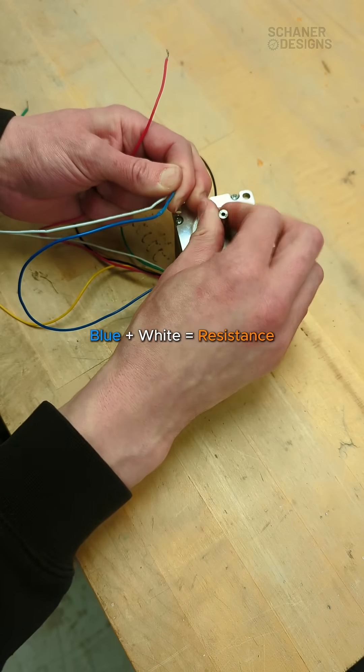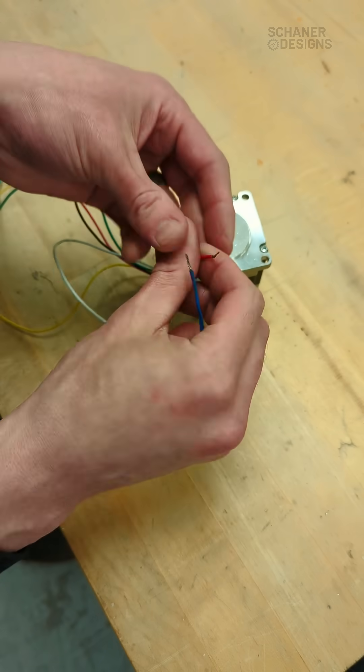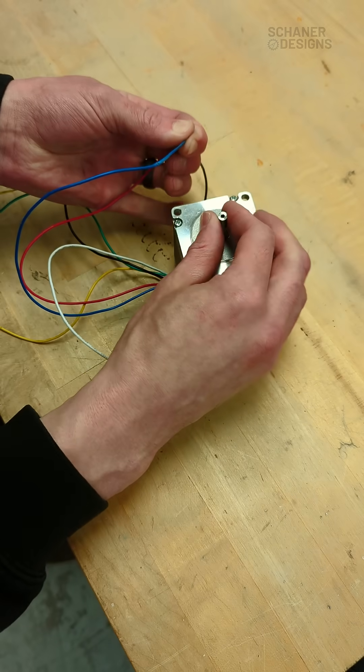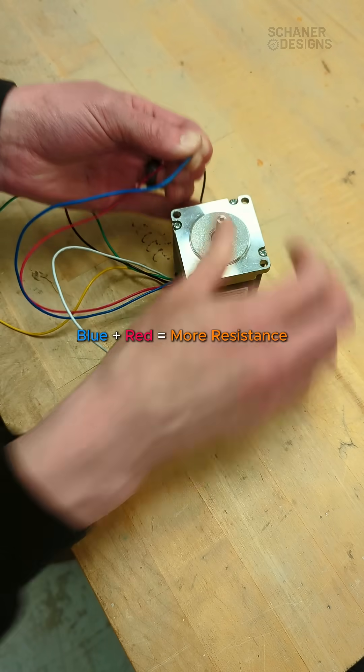So blue and white—there's definitely resistance, but it doesn't feel like as much resistance as if I connect the blue and the red. Yeah, there's definitely a lot more resistance there.